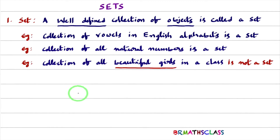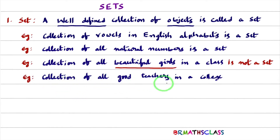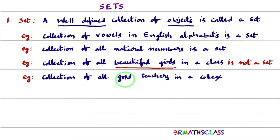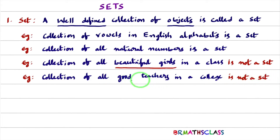Consider the collection of good teachers in a college. Suppose a particular teacher — you may feel that teacher is good, but another person may not feel the same. So 'good teacher' is a vague term; it is not well defined. Good teacher varies from person to person, so the collection of all good teachers in a college is not a set. I hope you understand the definition of a set.